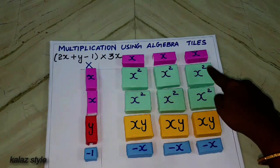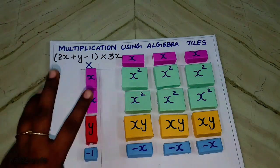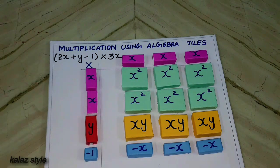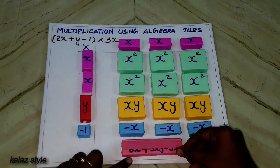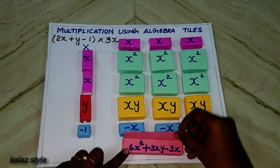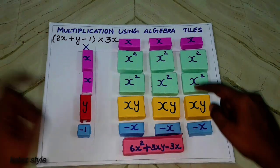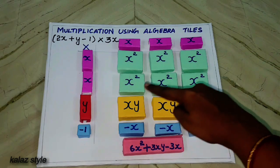Let me have done. Now we need to calculate everything. Let me display the final result in a separate tile. Answer is 6x square plus 3xy minus 3x.